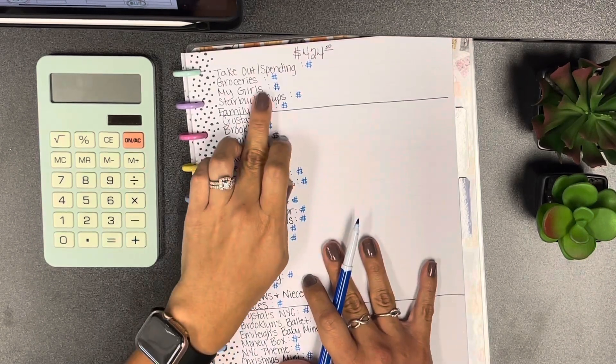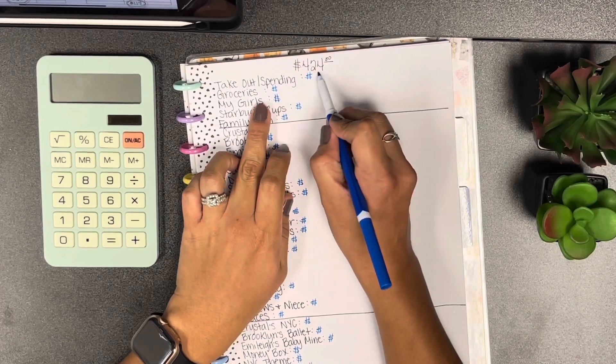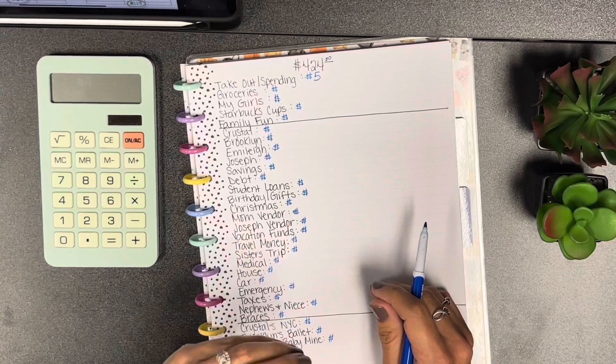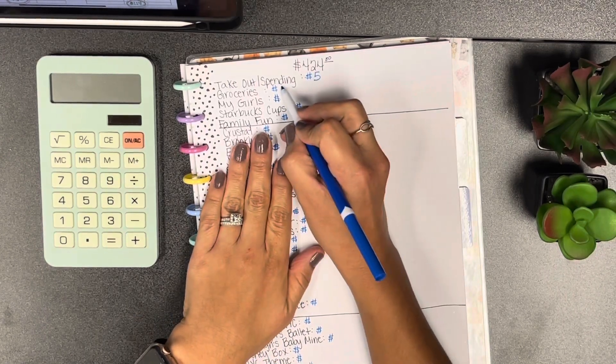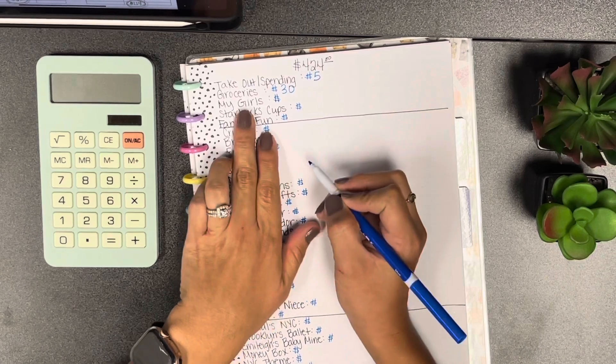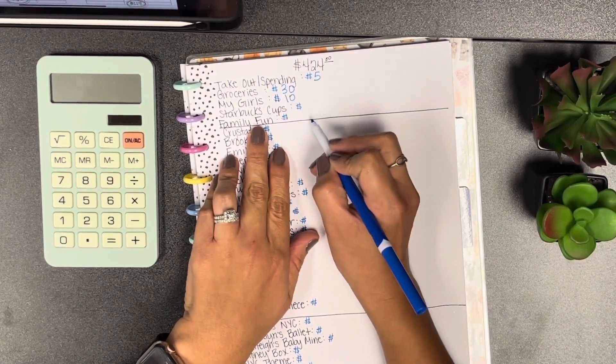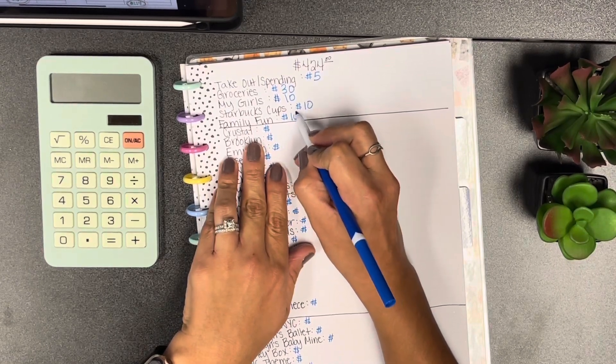For takeout and spending this week I'm gonna add five dollars. As you can tell I already put all the dollar signs just to make it go a little bit faster. Then for groceries we're gonna add 30, my girls we're gonna add 10.